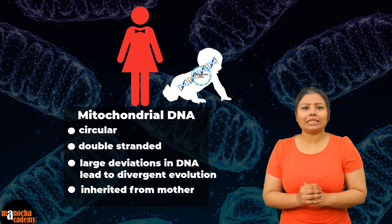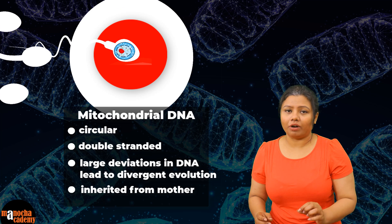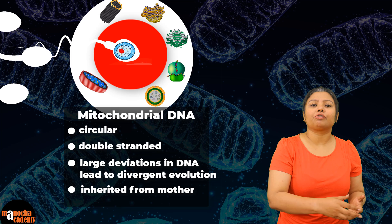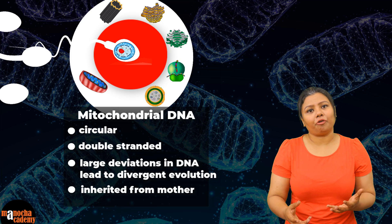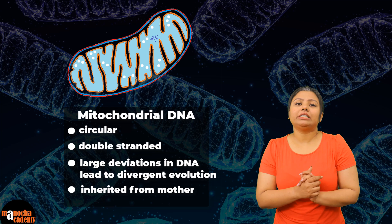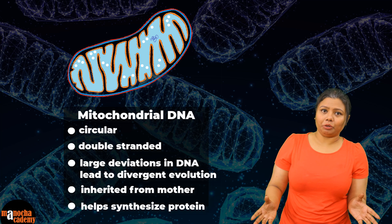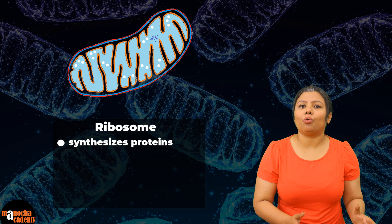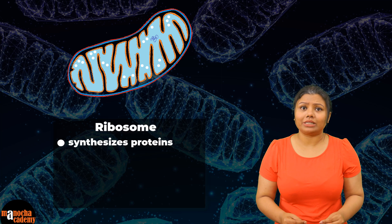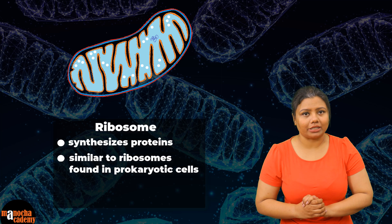The reason is that sperm only donates the nucleus to the egg or the ova, and all the other cell organelles that we inherit actually come from the egg. Therefore the mitochondrial DNA is maternal DNA. With the help of this DNA, mitochondria can synthesize its own proteins, and for synthesizing proteins mitochondria also has its own ribosomes. The ribosomes are just like those present in prokaryotic cells, not like the ones present in eukaryotic cells.